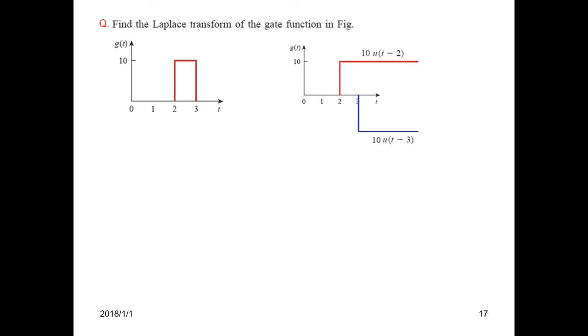That is why we write it as u(t-2). From this, it goes to infinity, so to get only this portion, we have to subtract all the remaining part. So from 3 seconds we